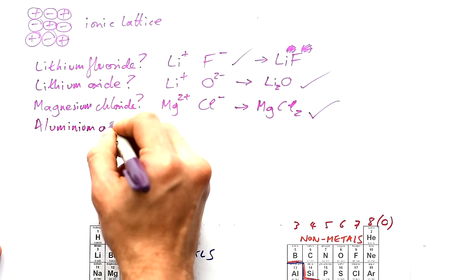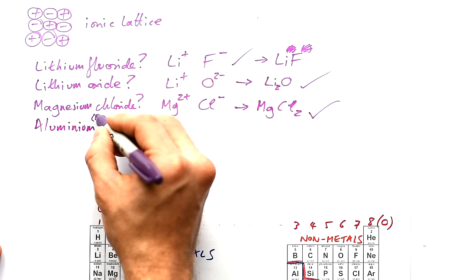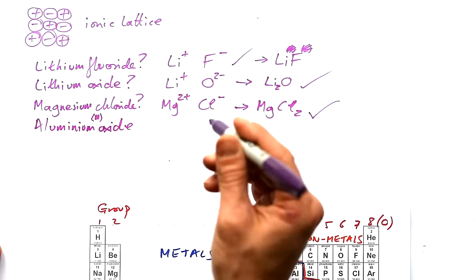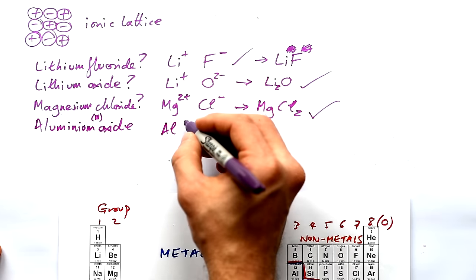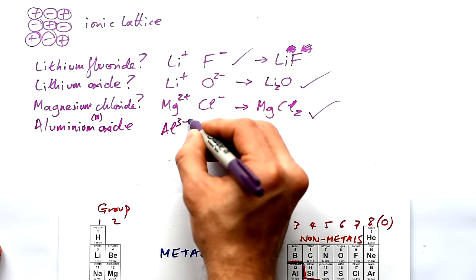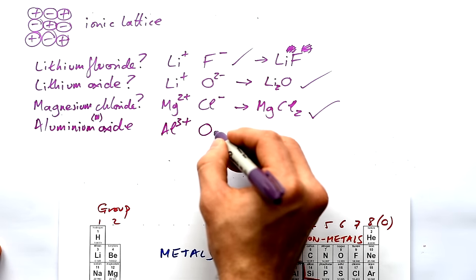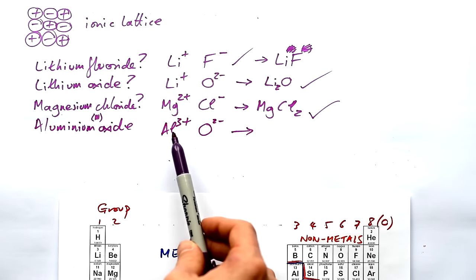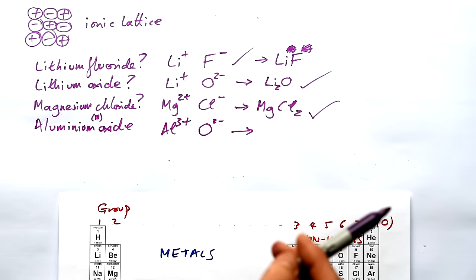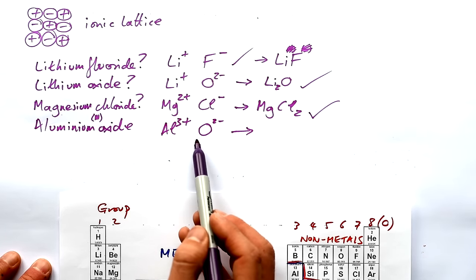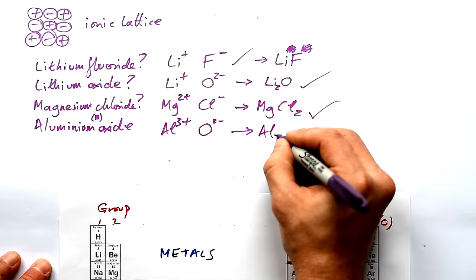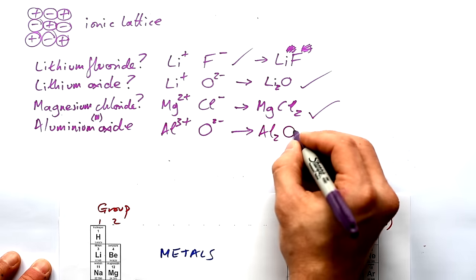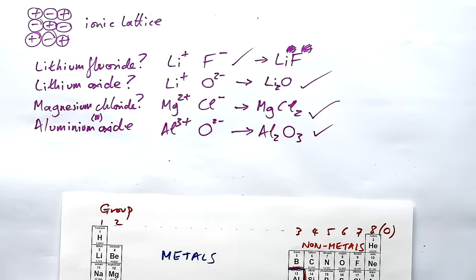Let's try a harder one: aluminium(III) oxide. If you see a Roman numeral after the metal, it tells you what ion it makes — so this is Al3+. Oxygen as usual is O2−. These definitely don't balance: three plus versus two minus. We need to multiply both so the charges are equal. Two lots of Al3+ gives six plus, so we need three oxygens — six minus. The formula is Al2O3.